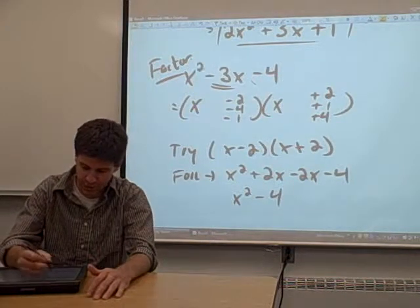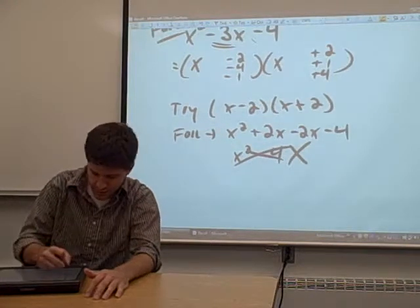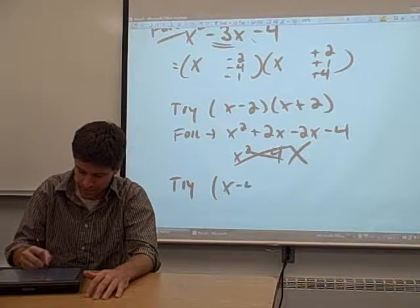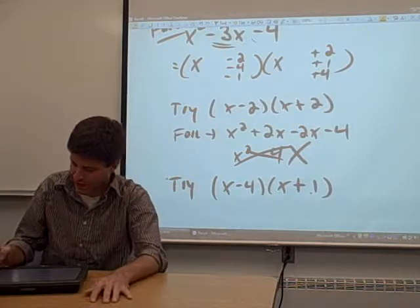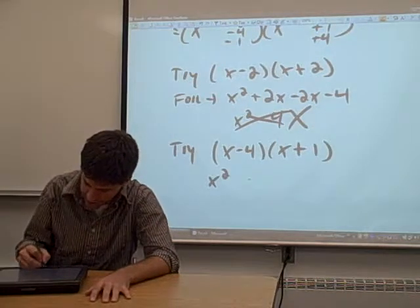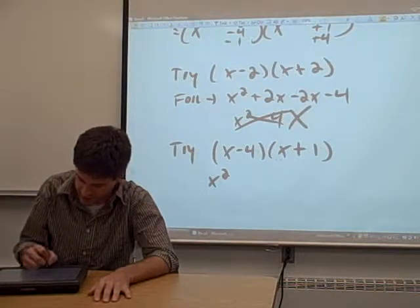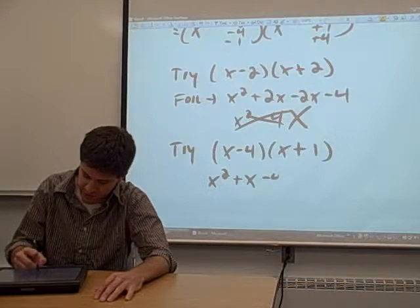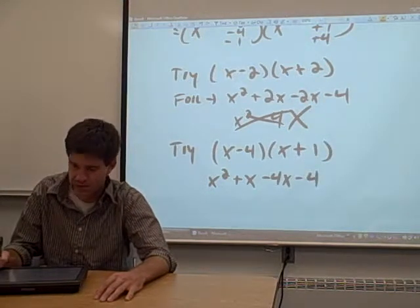So we need to try to factor it a different way. Let's try our next possibility: (x minus 4)(x plus 1). Try to FOIL that out. What you get is x squared as your first two terms multiplied. Multiply the outer terms, you get plus x. Multiply the inner two terms, you get negative 4x. Multiply the last two terms, you get negative 4.